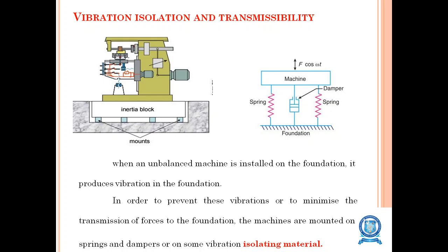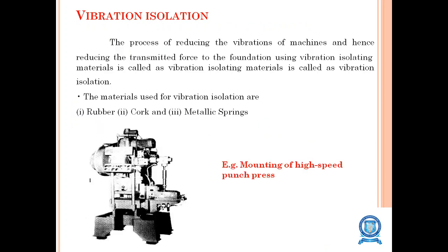Vibration isolation and transmissibility: when an unbalanced machine is installed on a foundation, it produces vibrations in the foundation. To prevent or minimize the transmission of forces to the foundation, machines are mounted on springs and dampers or vibration-isolating materials. Vibration isolation reduces machine vibrations and the transmitted force to the foundation. Common materials used are rubber, cork, or metallic springs.